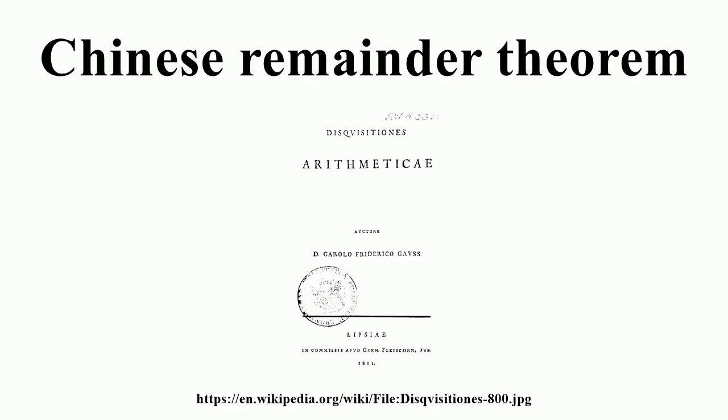Statement for principal ideal domains: Chinese remainder theorem for principal ideal domains. Let R be a principal ideal domain. If U1, ..., Uk are pairwise co-prime elements of R, where U = U1 · ... · Uk, then the quotient ring R/U and the product ring R/U1·R × ... × R/Uk·R are isomorphic via the following map. This statement is a straightforward generalization of the above theorem about integer congruences. Z is a principal ideal domain; the surjectivity of the map F shows that every system of congruences of the form can be solved for X, and the injectivity of the map F shows that all the solutions X are congruent modulo U.